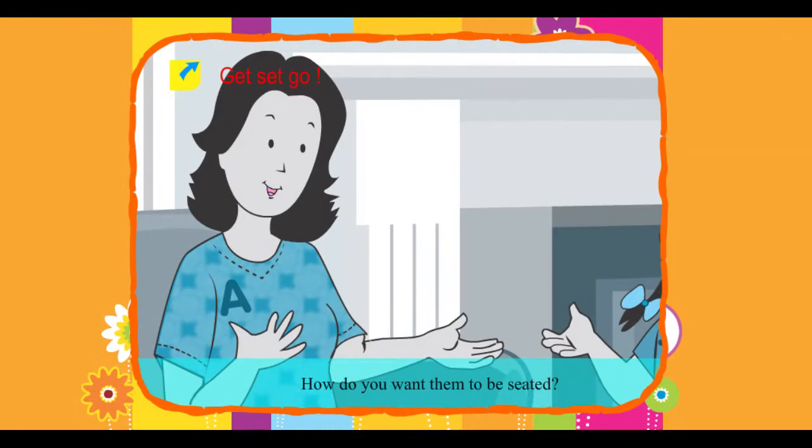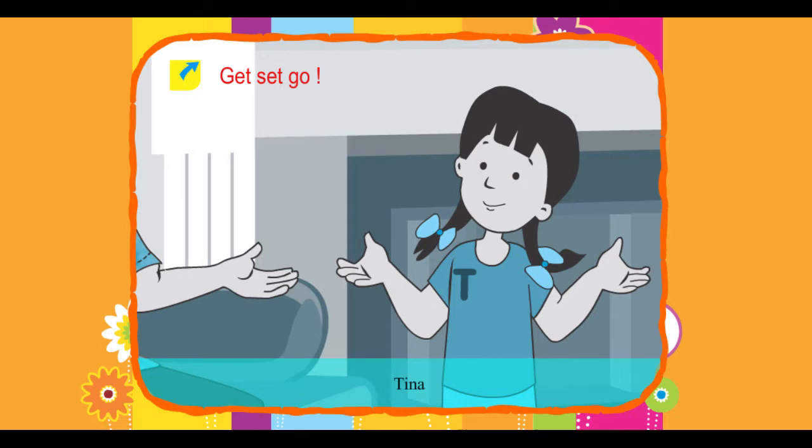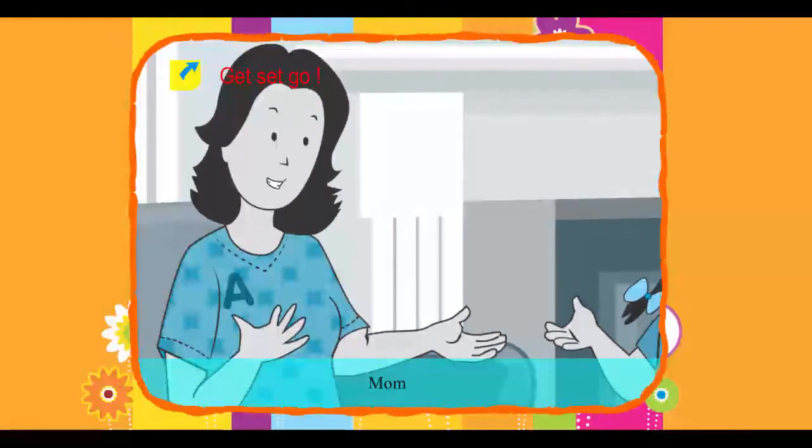Mom: How do you want them to be seated? Tina: All kids should be in each row and adults should be seated on other rows.